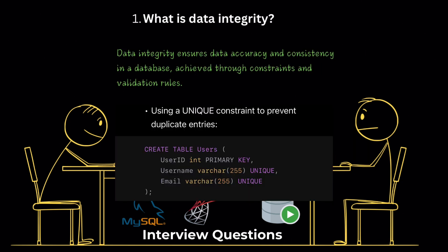What is data integrity? Data integrity ensures that data in a database is accurate and consistent. This is achieved through constraints and rules that validate data entry and maintain accuracy over time. Example, using a unique constraint to prevent duplicate entries.